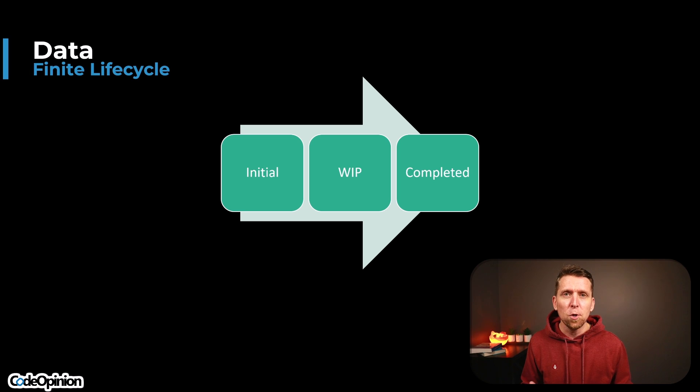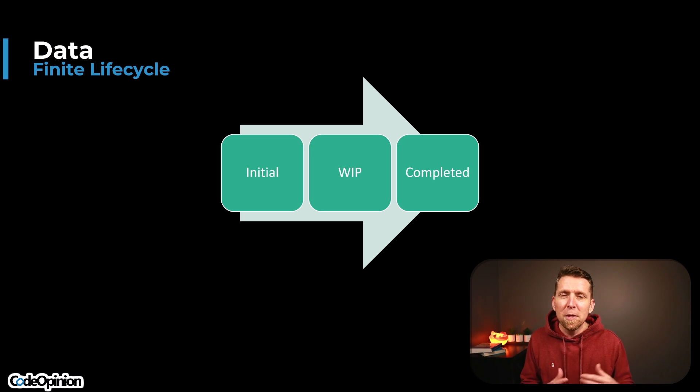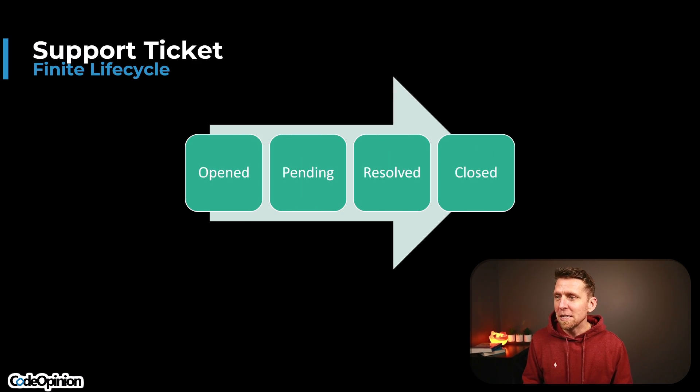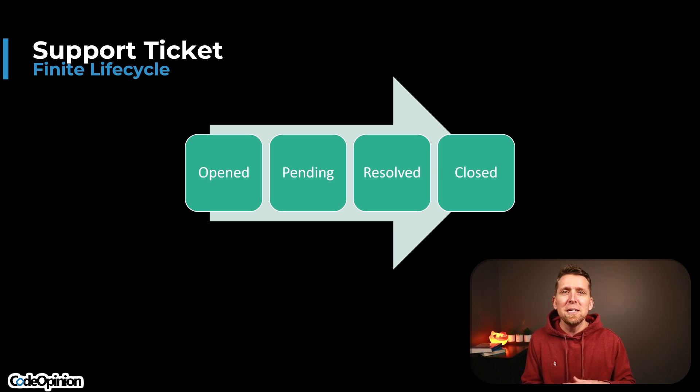Another thing to consider is the life cycle of the data you're working with. In any system, there's often a finite life cycle — you're creating data, some state changes happen, and then it's done and not really changing anymore. Think of a support ticket system: a ticket opens, goes through pending, resolved, and closed states. After it's closed, you're not likely to mutate that data. This matters for partitioning, indexes, bounds, and even event sourcing where event streams should be relatively small and finite. Think about life cycles for your business entities and workflows — they are generally finite.